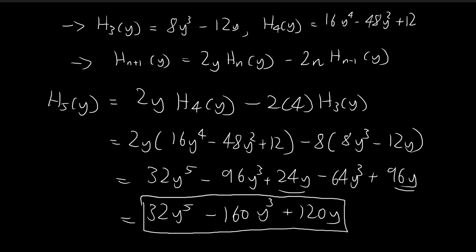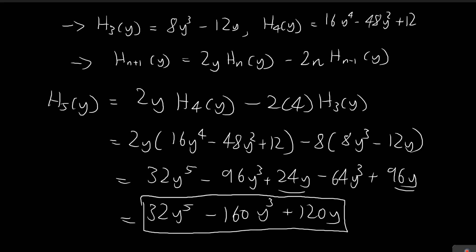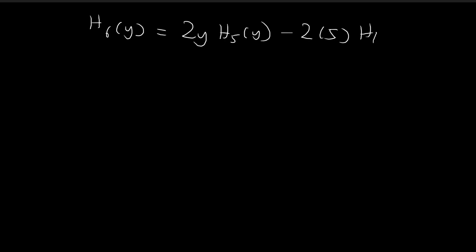Now we're going to take this one step further and derive h6. To derive h6, we're going to use h4 and h5 with the recursion formula. So h6 of y is equal to 2y times h5 of y minus 2 times n times h4 of y. In this case, n is equal to 5, so we just substitute it in.